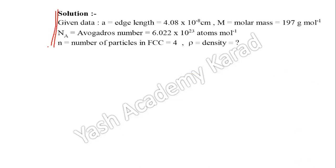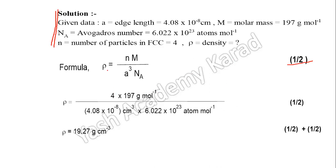For the density calculation, you have to use this formula: density is equal to n into m divided by a cube into NA, that is Avogadro's number. Substitute the values of the data. You can calculate the density as 19.27 gram per cm³.